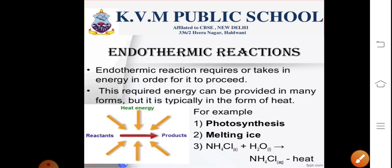Now let us talk about endothermic reactions. Endothermic reactions require or take energy so as to proceed or for the process of completion of the reaction. The energy required can be provided in many forms, but generally it is in the form of heat. Examples of endothermic reactions are photosynthesis — in the process of photosynthesis, there is formation of glucose utilizing carbon dioxide, water, and the energy of sunlight (photons), so that light energy gets converted into chemical energy and there is production of carbohydrates. Melting of ice is another example of endothermic reactions.